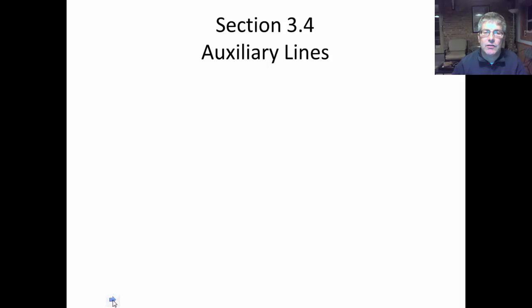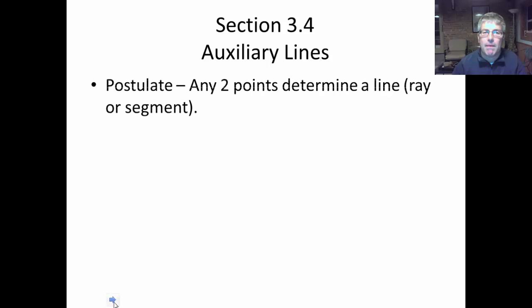And the last thing in this section is auxiliary lines. This is going to be very helpful for us when we've got proofs with circles or we need an additional line. We have a postulate that any two points can determine a line, a ray, or a segment.